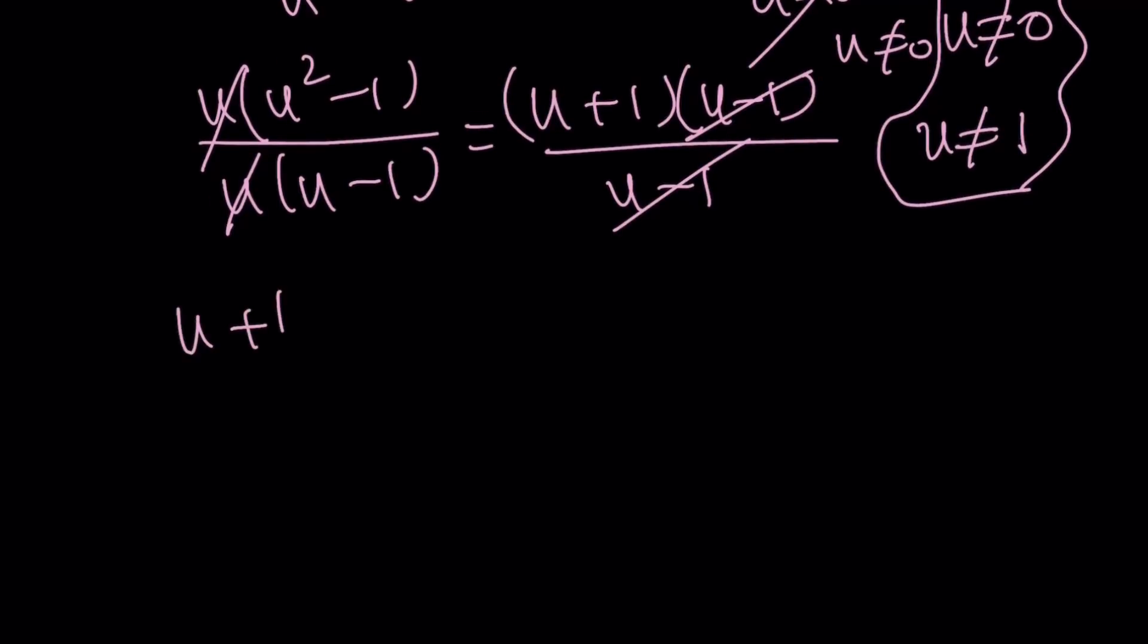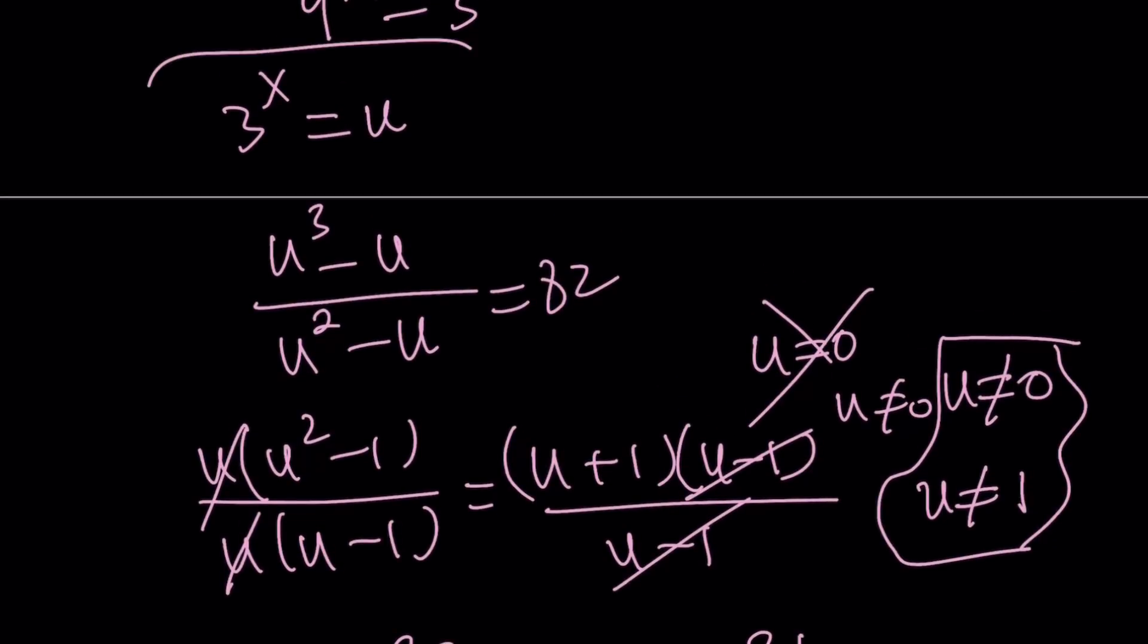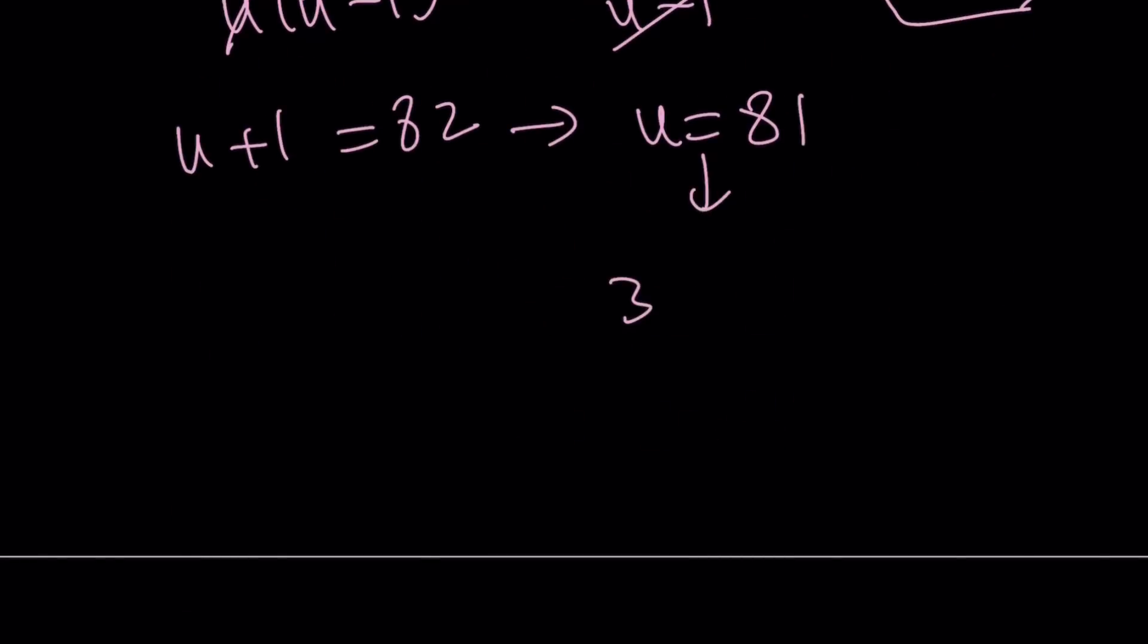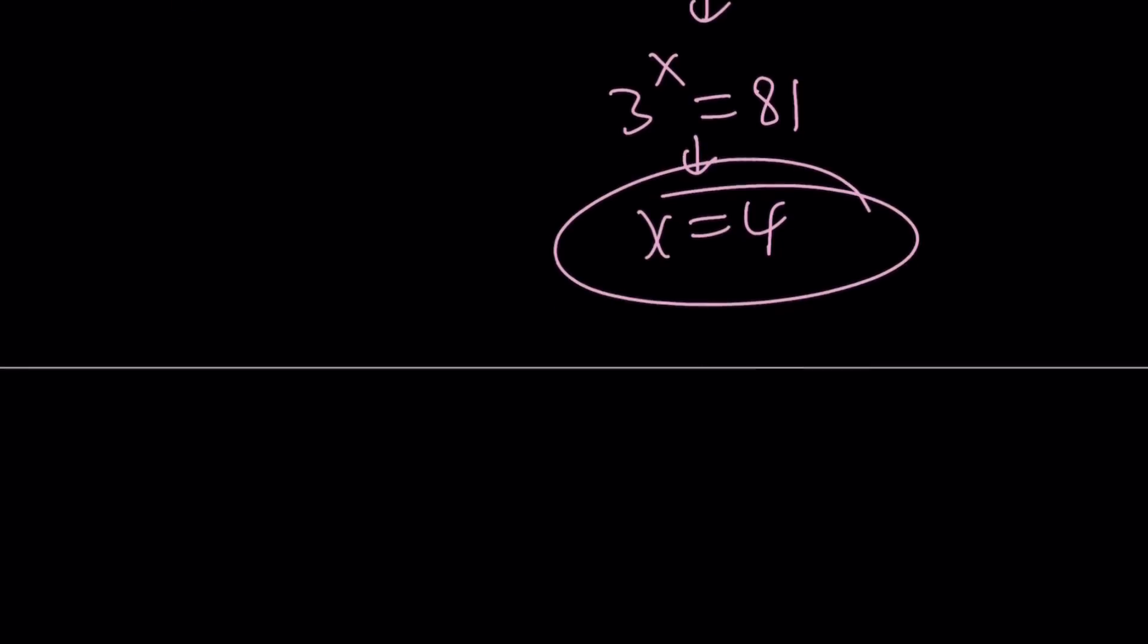u plus 1 equals 82. And that implies, guess what? u equals 81. But what is u? u is 3 to the power x. So let's set this equal to 3 to the power x equals 81. And then this implies x equals 10. And this brings us to the end of this video.